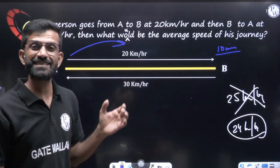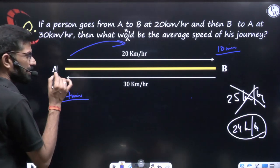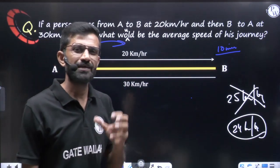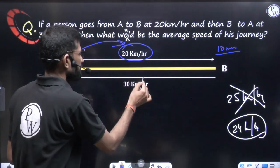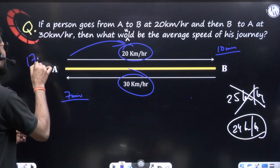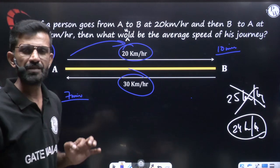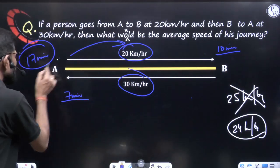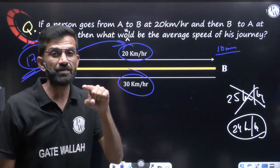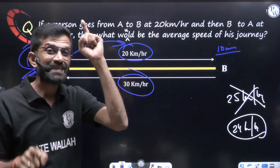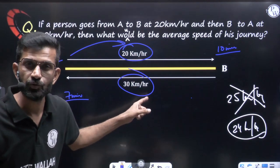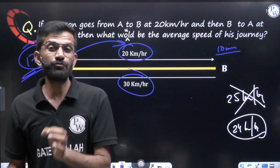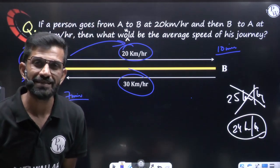Average speed means: the single common speed at which, covering the same total distance, the person would take the same total time. So in the second case, if he covers the full journey — both ways, i.e., 2X km — at one constant speed and takes the same total time, that constant speed is called the average speed.